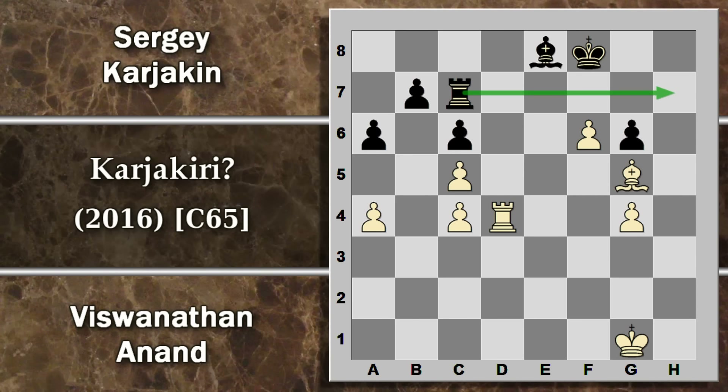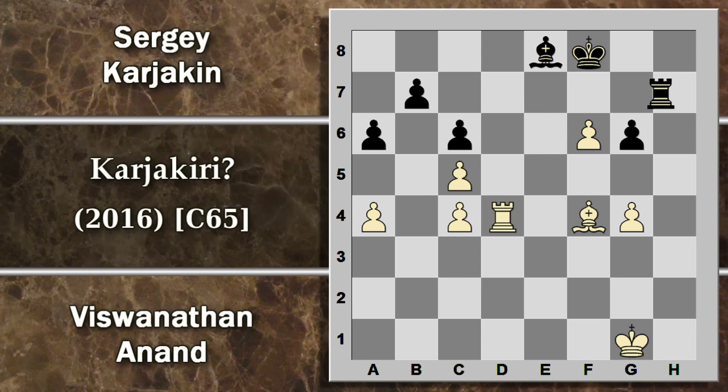Le carte non sono ancora finite per Karjakin. Viene giocata re F8 per aprire la via alla torre. Si prosegue con alfiere F4 che attacca la torre, la quale si sposta sulla colonna H. Ora re G2: è il momento di attivare il re, che funziona anche da difensore di G4 se la torre nera volesse penetrare. Si prosegue con alfiere D7 comunque con attacco su questo pedone. Viene giocata alfiere G5: l'alfiere si riporta nella posizione iniziale, la torre difende F6 e la torre difende G4. Tra l'altro la torre nera non può entrare in H4.